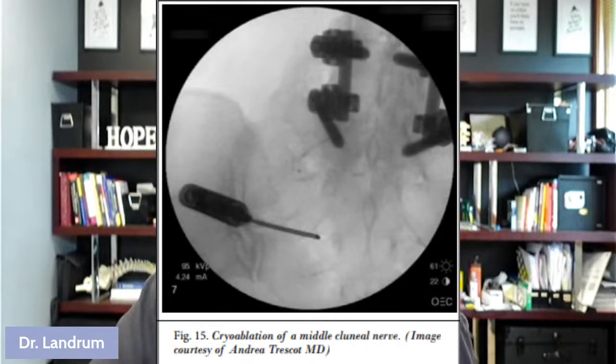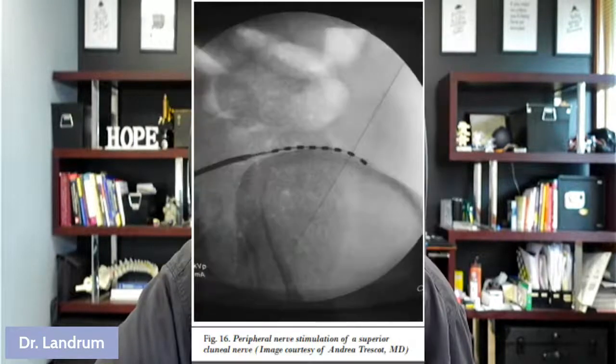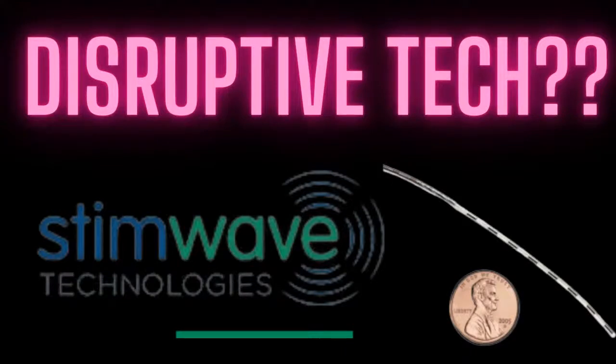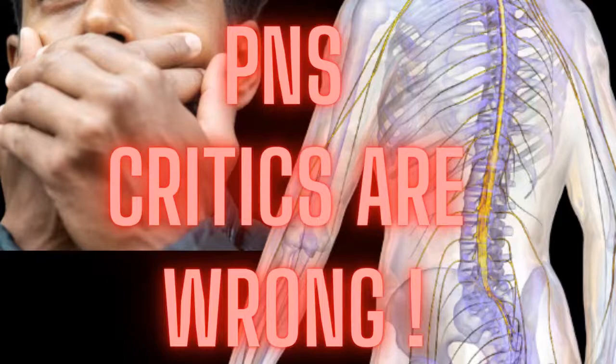In addition, you can do cryoablation — which we've also covered in our Alvera video — to go after the nerve in a safe fashion. You can also do peripheral nerve stimulation, which we've discussed extensively; we're one of the few channels that really gets into peripheral nerve stimulation. Related videos include our content on disruptive tech, stem wave, and peripheral nerve stimulation — including why the critics are wrong.